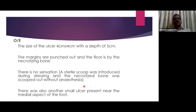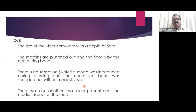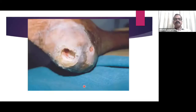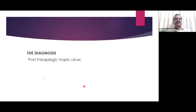On examination, the ulcer measured 4 cm × 4 cm with a depth of 5 cm. Margins were punched out and the floor consisted of necrotizing bone. There was no sensation — the necrotized bone was scooped out without anesthesia. A small additional ulcer was present near the medial aspect of the foot. Diagnosis: post-paraplegic trophic ulcer.